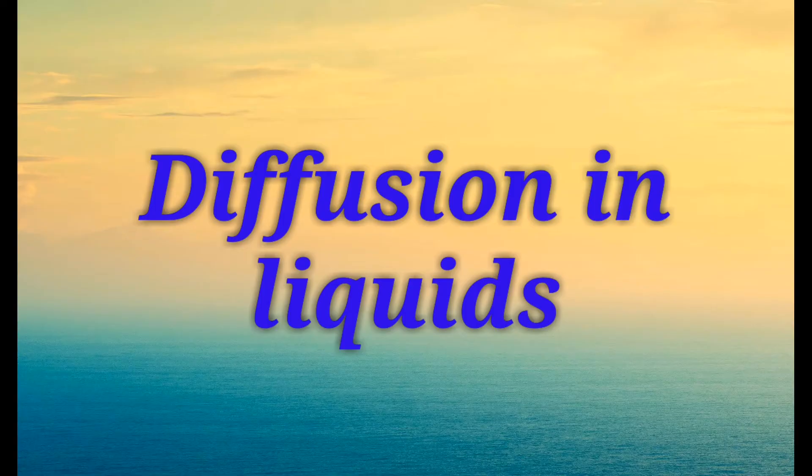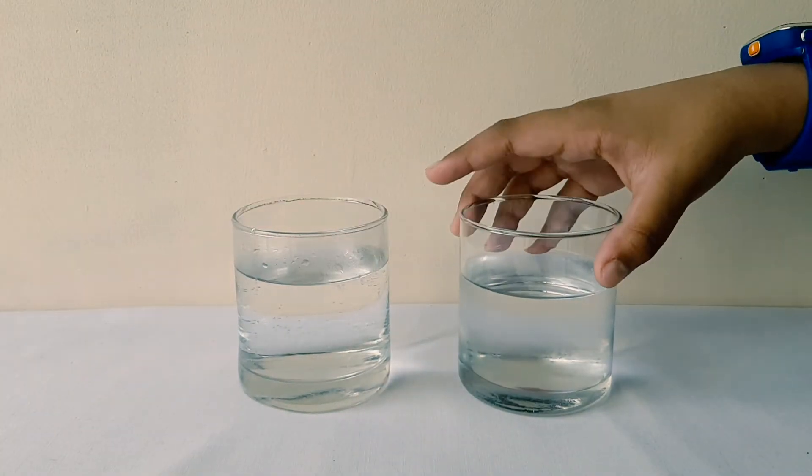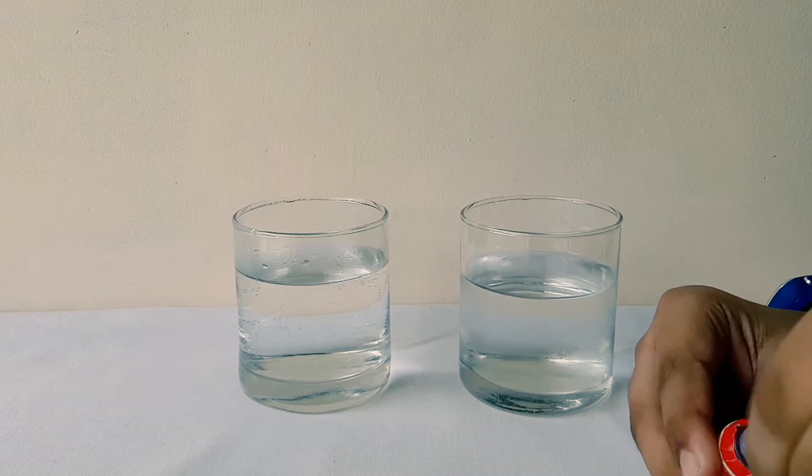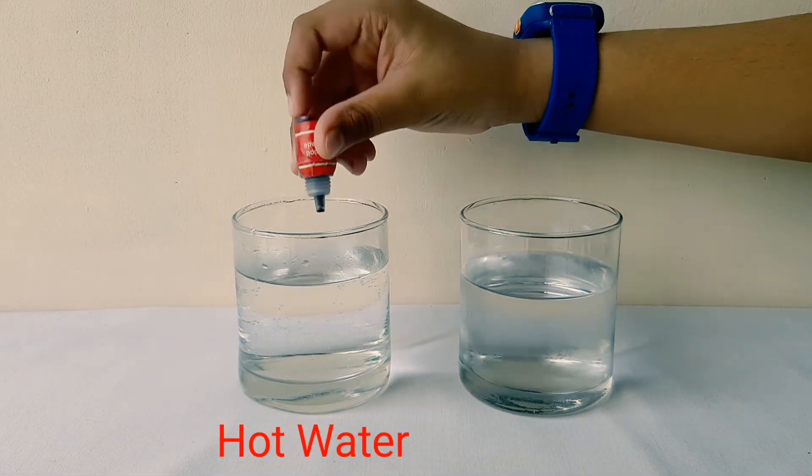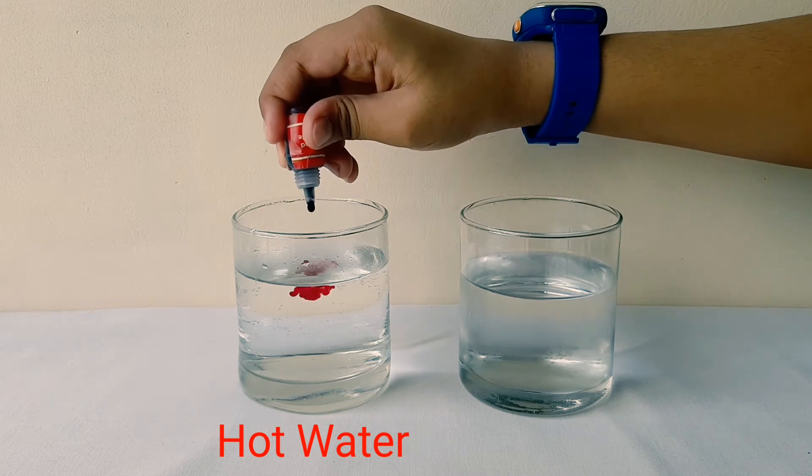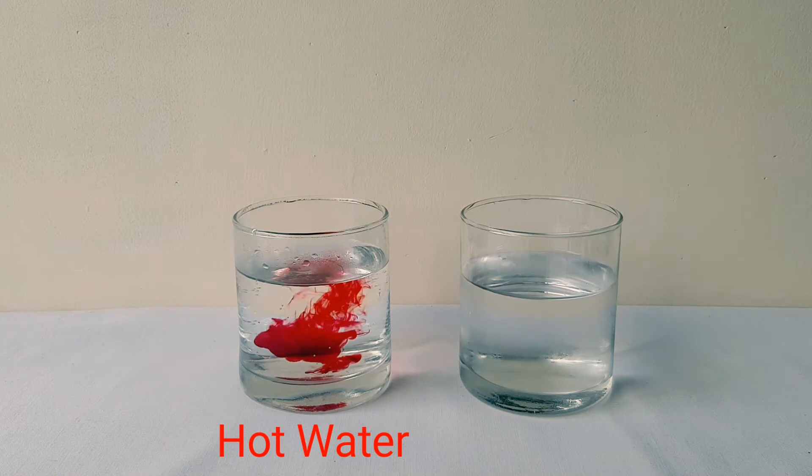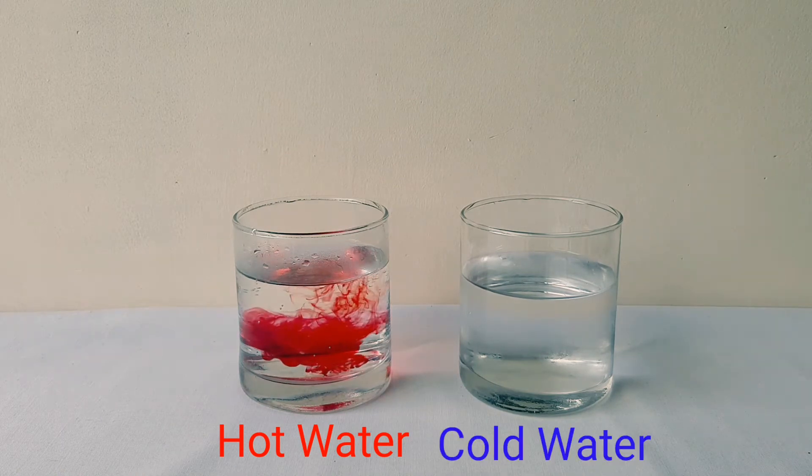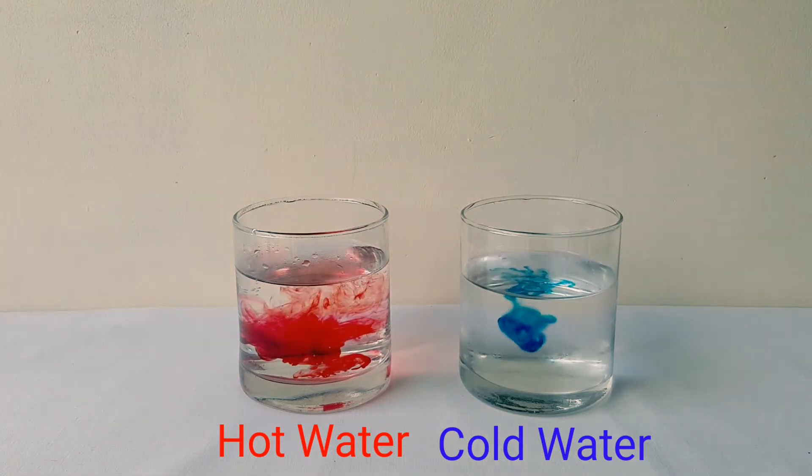Diffusion in liquids. So here I have some hot water and some cold water. I am going to put food coloring into them. Diffusion will be quicker in hot water because the particles will have more energy and can move more quickly. In cold water you can see that diffusion takes place very slowly.